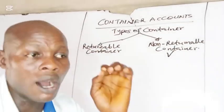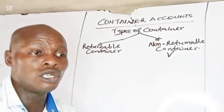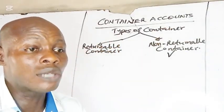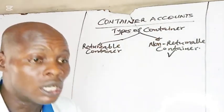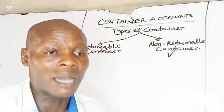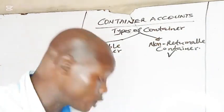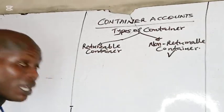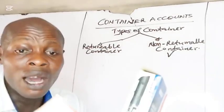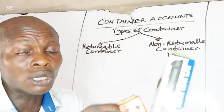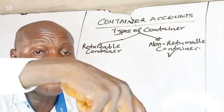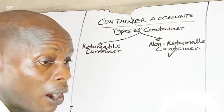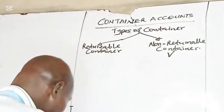Because the value of non-returnable containers is very low, the cost of those containers is usually built into the selling price of the product. That means the cost of all these containers already forms part of the selling price of the item. So that is the treatment for non-returnable containers.